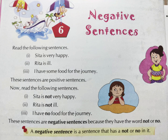Now read the following sentences. Sita is not very happy. Rita is not ill. I have no food for the journey. These are negative sentences because they have the word 'not' or 'no' in them. A negative sentence is a sentence that has 'not' or 'no' in it. You can identify these sentences by either the presence of 'no' or 'not'.